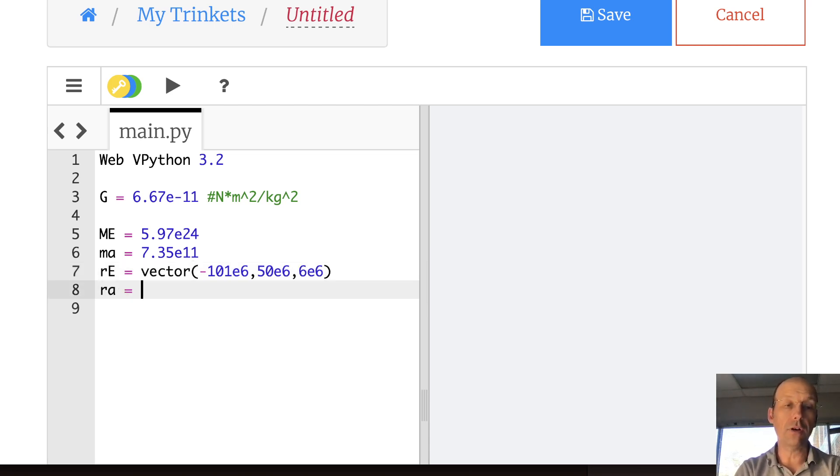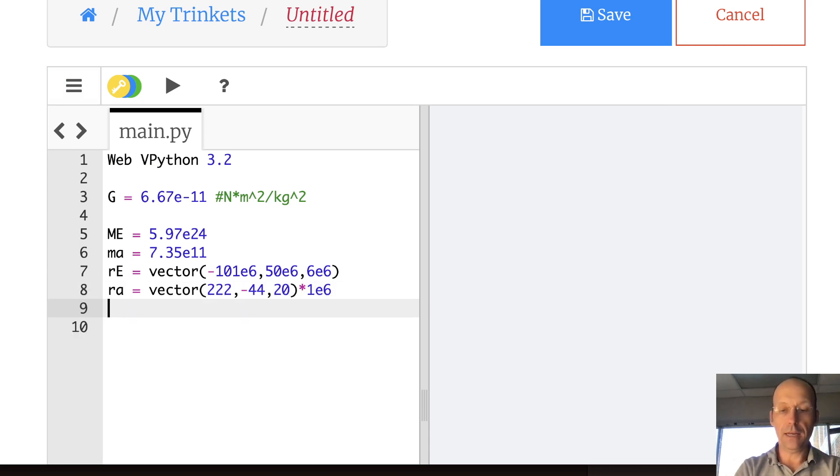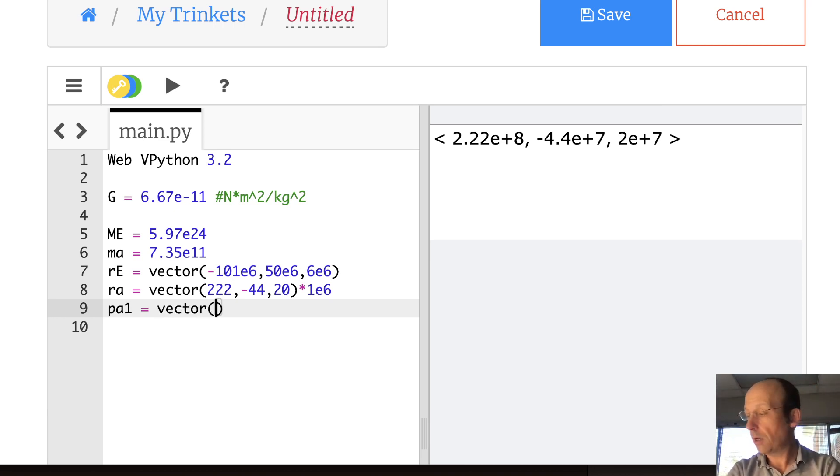And then let's put our asteroid as vector. I'm going to do this one differently. I'm going to say 222, negative 44, 20, and then times 1 e6. So you can see that if I don't want to write that in each individual part, I can put it as a factor out here just like I did before. And now if I print RA, just so you can see that it does indeed work. There, it put the factor in there. I don't need the momentum of the earth. I do need the momentum of the asteroid. So I'm going to call this PA1, the momentum at the beginning of the time interval, vector negative 2.95, 8.84, 5.89 times 1 e14. And then I need, let's put DT is 5,000. That's my delta T.